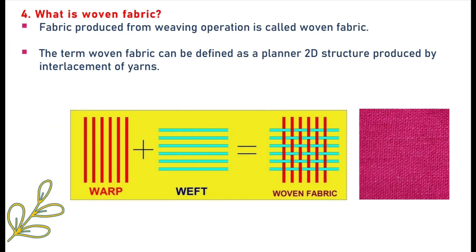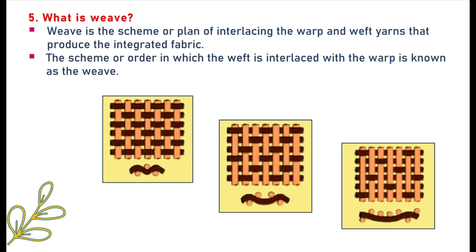Fourth question: what is woven fabric? Fabric produced from the weaving operation is called woven fabric. The term woven fabric can be defined as a planar 2D structure produced by interlacement of yarns. Next question: what is weave? Weave is the scheme or plan of interlacing the warp and weft yarns that produces the integrated fabric. The scheme or order in which the weft is interlaced with the warp is known as the weave.